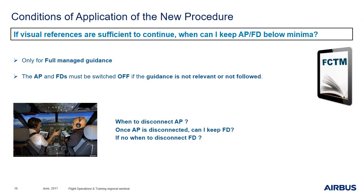Let's now review the conditions of application of this new procedure. The two basic rules are: first, this procedure is only applicable to full managed guidance; and second, the AP and FDs must be switched off if the guidance is not relevant or not followed. The conditions of application are detailed in the flight crew techniques manual. The questions of when to disconnect the AP, whether to keep the FDs once the AP is disconnected, and when to disconnect the FDs should be discussed during the approach briefing.